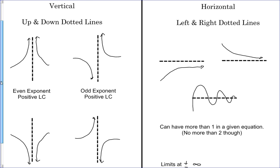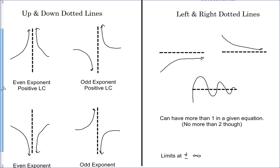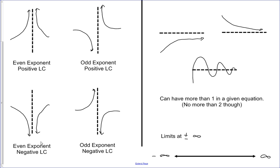Here we have four little graphs for vertical asymptotes. If you have a vertical asymptote with an even exponent and a positive leading coefficient, both sides of your function go to positive infinity as you approach your asymptote. With an odd exponent and positive leading coefficient, the left side approaches negative infinity and the right side approaches positive infinity. With an even exponent and negative leading coefficient, both sides approach negative infinity. With an odd exponent and negative leading coefficient, the left goes positive and the right goes negative.